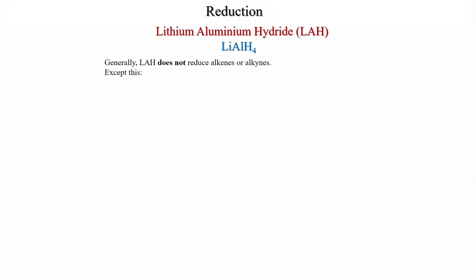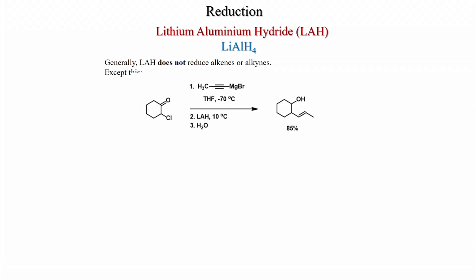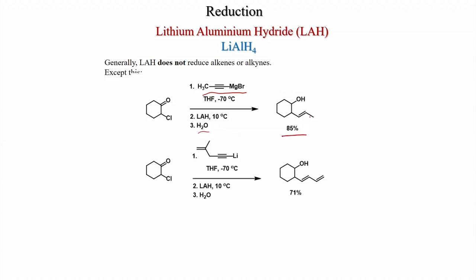Generally LiAlH4 does not reduce isolated alkynes or alkenes, but activated alkynes are reduced. For a 2-chlorocyclohexanone treated with a propargylic Grignard reagent in THF at −70°C, followed by LiAlH4 and H2O, the alcohol product contains a double bond where the triple bond was (alkyne-to-alkene reduction).